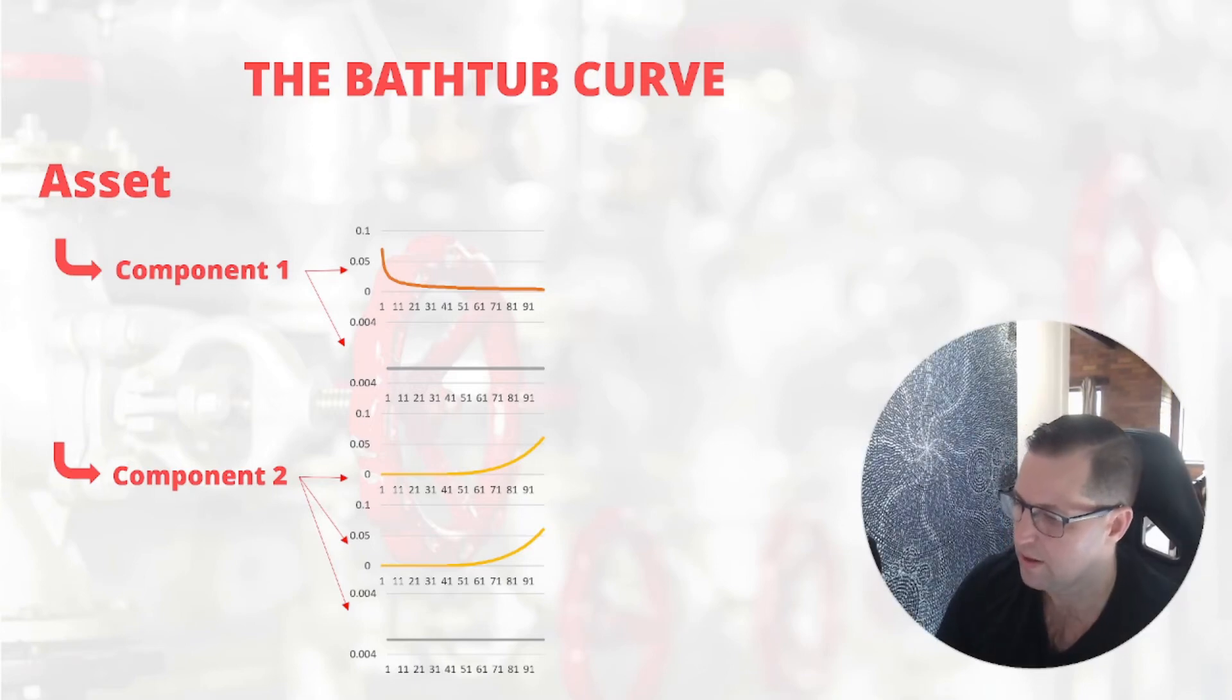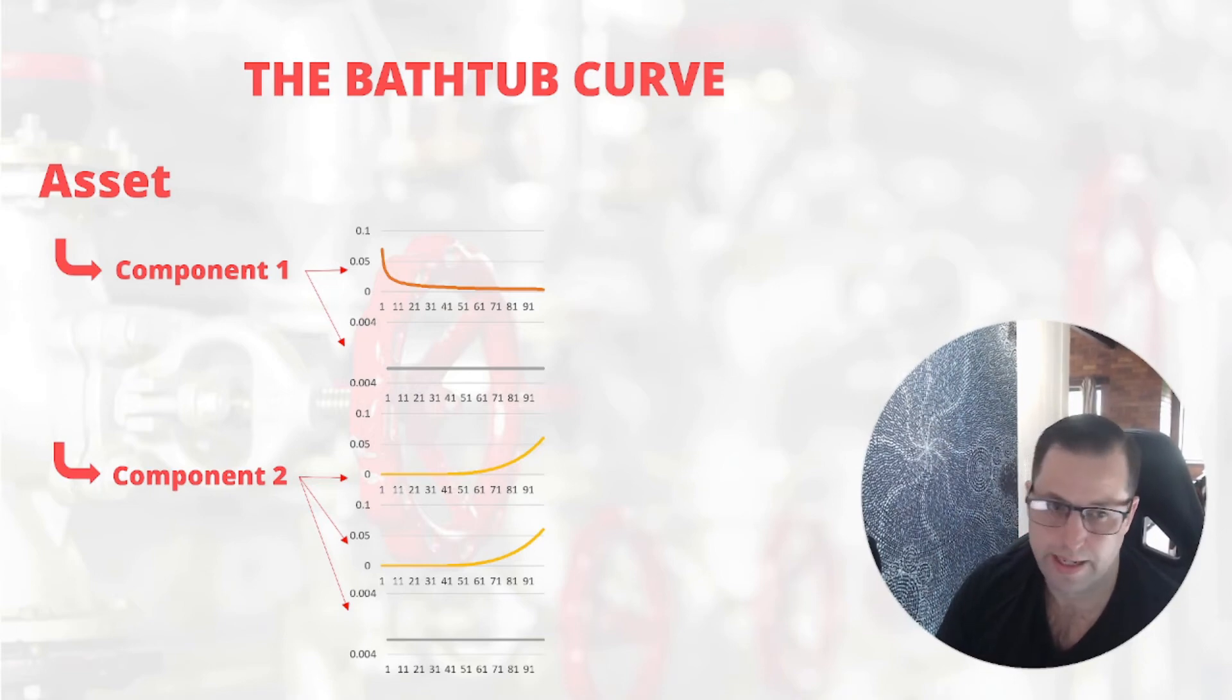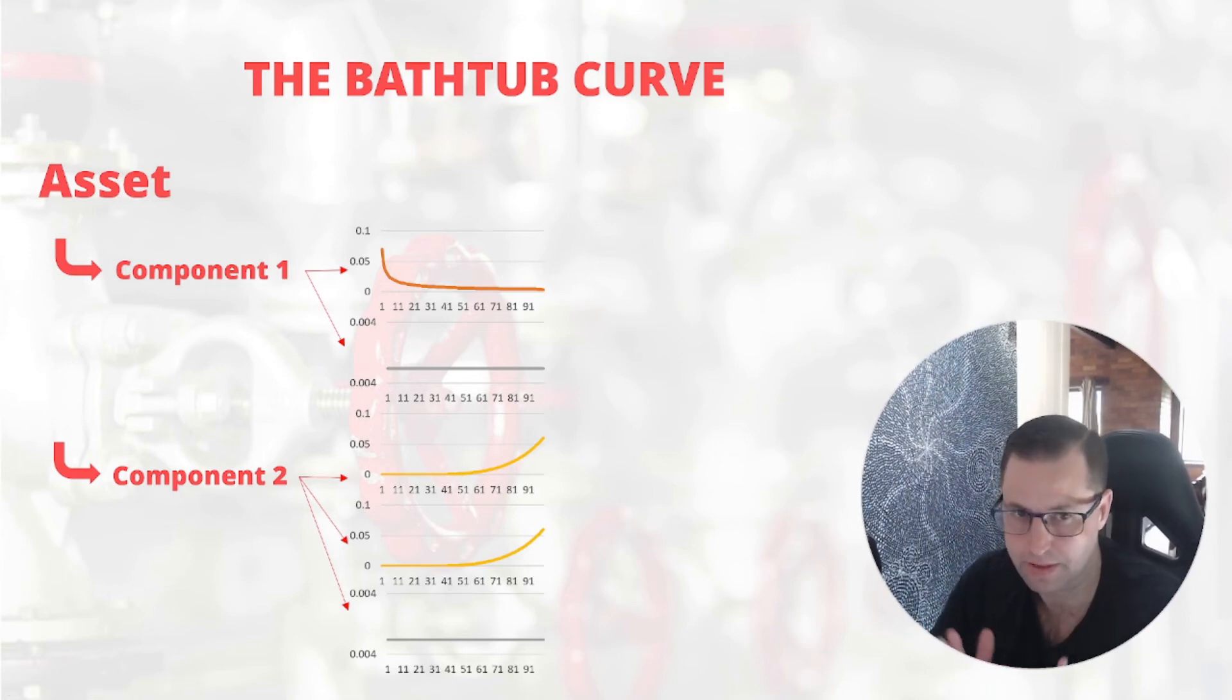Now these individual modes of failures can be rolled up to either a component level or an asset level. If you rolled component number one up to a component level, it would have both an infant mortality and random aggregated or stacked on top of each other to represent that component.